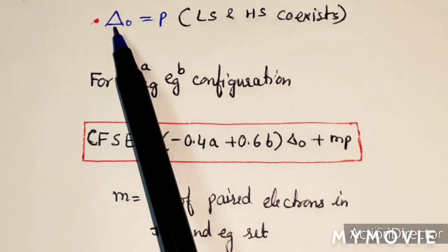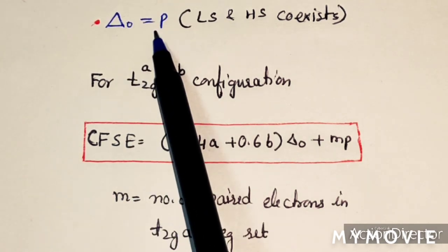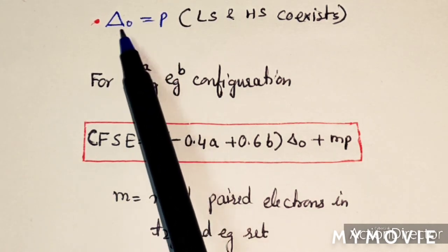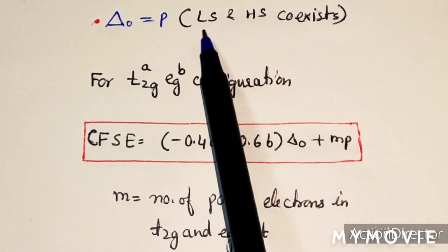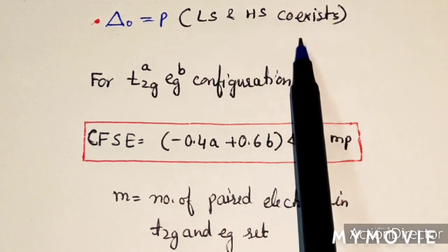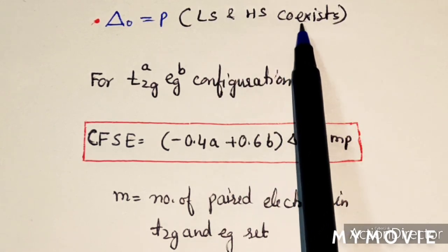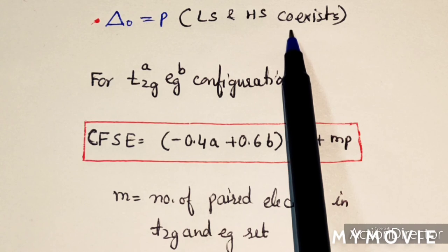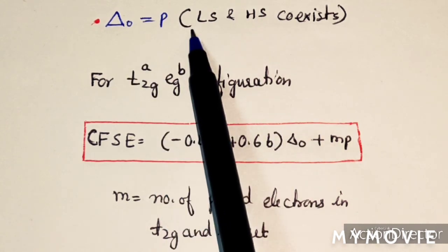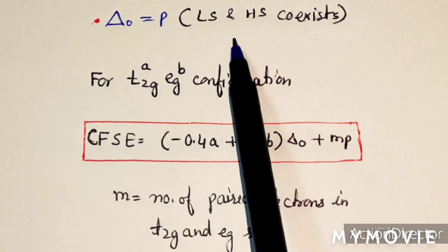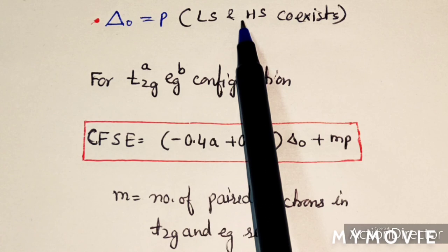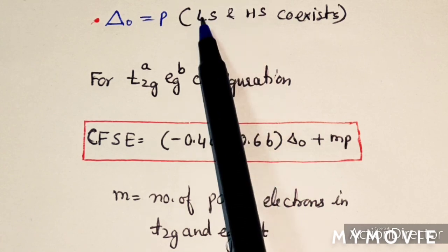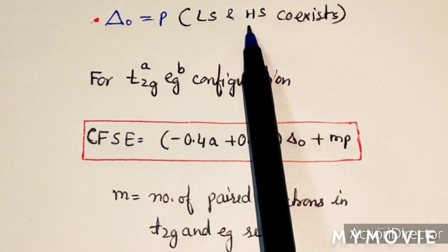There is also a situation where delta O equals P. In this case, low spin and high spin complexes coexist — this is related to spin crossovers, studied at MSC level. In this lecture, we will only consider two conditions: either a purely low spin or a purely high spin complex.